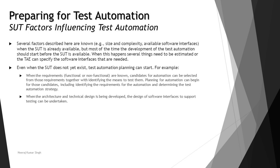Even when the SUT does not yet exist, test automation planning can very well start. For example, when requirements are known, candidates for automation can be selected. From those requirements you can identify what kind of tests, environment, and setup is required. Planning for automation tests can begin, including identifying automation requirements and determining the test automation strategy. When the architecture and technical design is being developed, the design of the software interface to support testing can be undertaken, and you can start building your automation frameworks which can be executed as soon as your product is available.